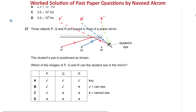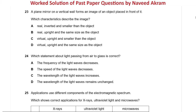For image R, if we try to draw a ray from the image of R to the eye, this ray does not intersect the mirror. That means the image of R cannot be seen by the student's eye, because the incident ray will not fall on the mirror. So we can see P and Q but the image of R will not be visible. The answer is option B.